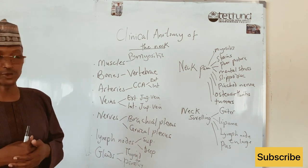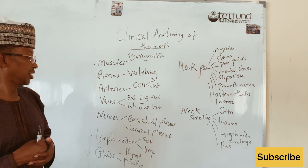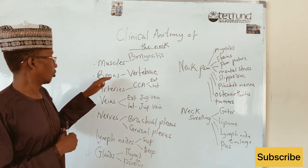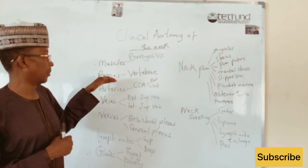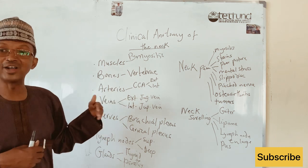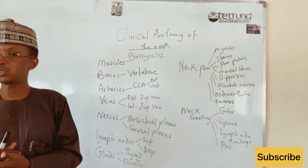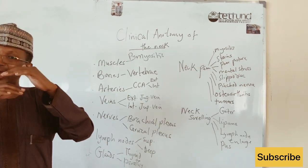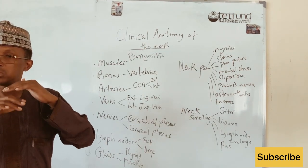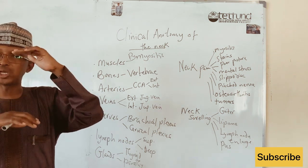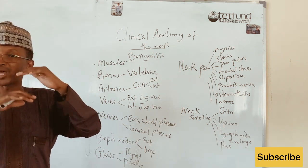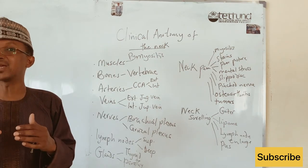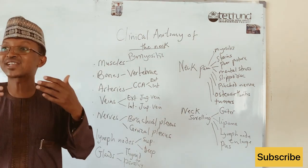It's not only the sternocleidomastoid muscle that can be inflamed or infected — other muscles of the neck can also be affected. We have many muscles of the neck, including the infrahyoid and suprahyoid muscles, which can also become inflamed. Regarding the bones, the vertebral bones are irregular bones arranged one above the other, and they can get fractured.